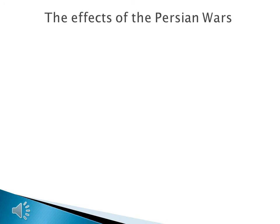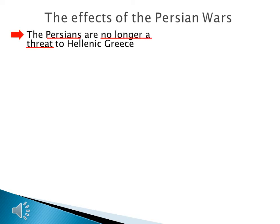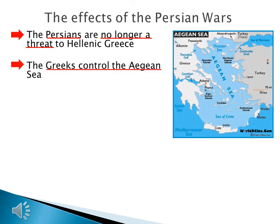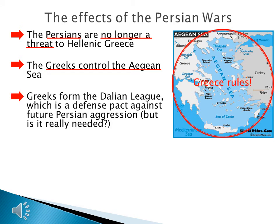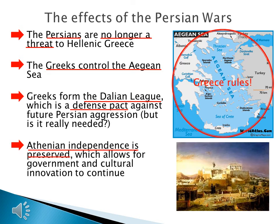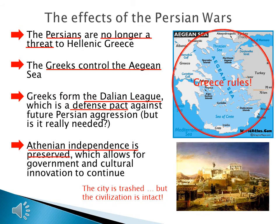The Greeks, an Iron Age civilization, defeat the ancient era Persians, and this has a tremendous impact on history. The Persians are no longer a threat to Hellenic Greece — never again will this ancient era civilization attempt to invade this newer classical era civilization. The Greeks also control the Aegean Sea. They further form the Delian League, a defense pact against future Persian aggression. And finally, Athenian independence is preserved, which allows for government and cultural innovation to continue — the city is trashed, but the civilization is intact.